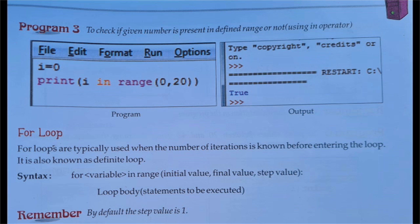For loops are typically used when the number of iterations is known before entering the loop. For loop ka use hum tab karte hain jab hume number of iterations pehle se hi pata hon loop mein enter karne ke pahle — yani hum ko pata hota hai ke loop mein kitne times iteration ya repeat karna hai. Here is the syntax for the for loop.